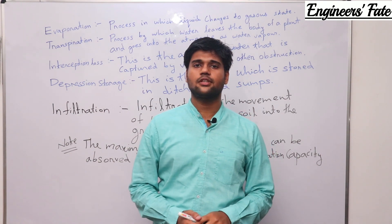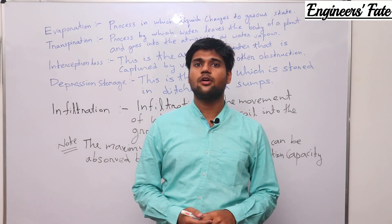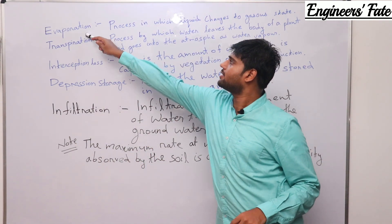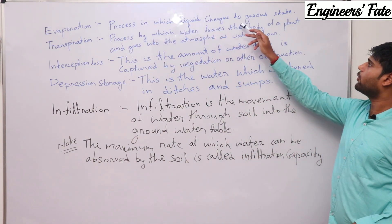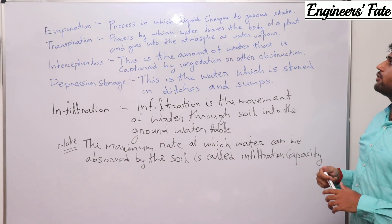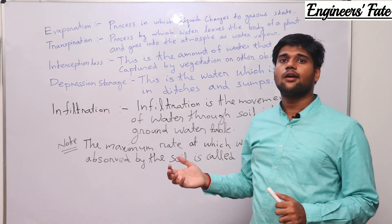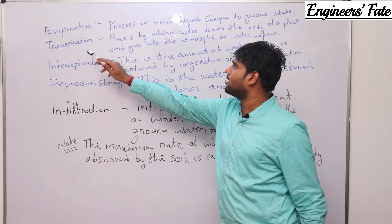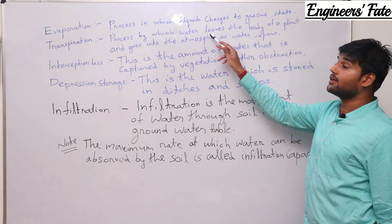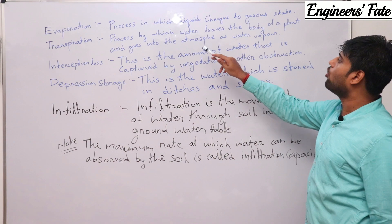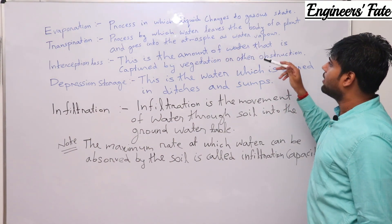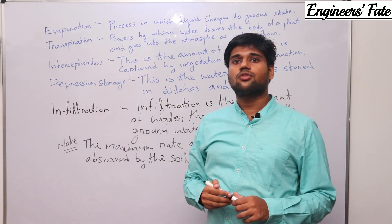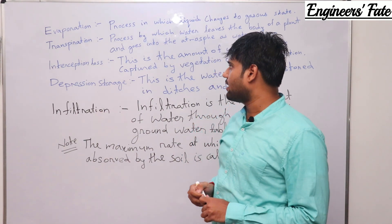We have seen the hydrological cycle. Let's discuss some important points. The first point is evaporation — it is the process in which liquid changes to the gaseous state. Due to the sun's presence, water vapor goes to the atmosphere, and that process is known as evaporation. Next, transpiration: the process by which water leaves the body of a plant and goes into the atmosphere as water vapor. Trees generally produce some amount of water vapor that goes to the atmosphere — that is transpiration.